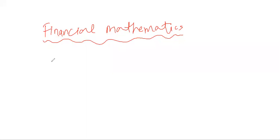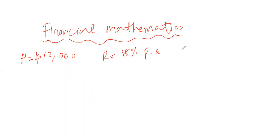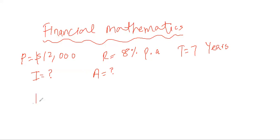Let's suppose someone is depositing a principal amount of 12,000 into a bank account, the interest rate is 8 percent per annum, and the time is seven years. We have to find out how much simple interest — represented by I — they will get at the end of seven years, and what the total amount will be. To begin, you need to use the formula: I equals P times R times T, divided by 100.